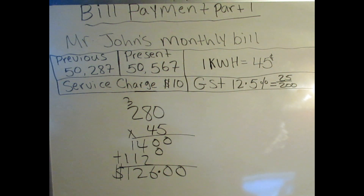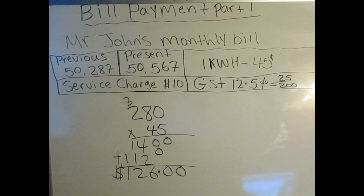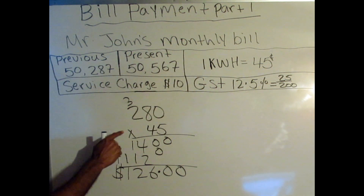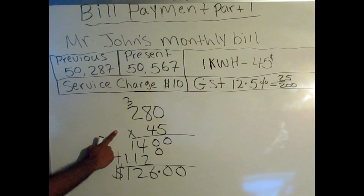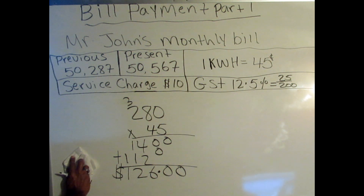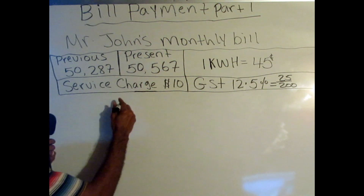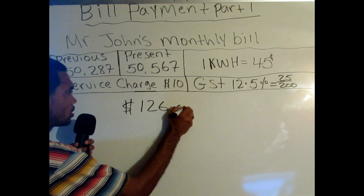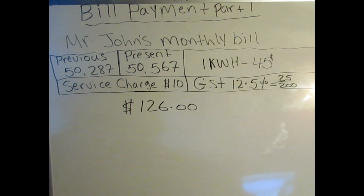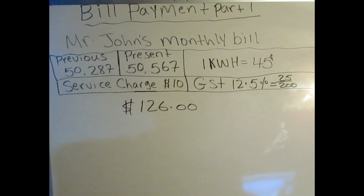How do we get that $126? By simply multiplying in step two — 280 kilowatts, the rate of 45 cents per kilowatt, gives us $126. So now let's move into step three. It's $126 for the 280 kilowatts that Mr. John used.